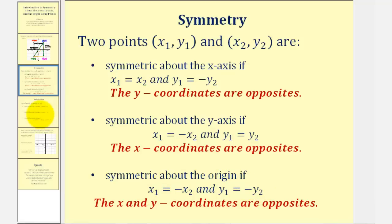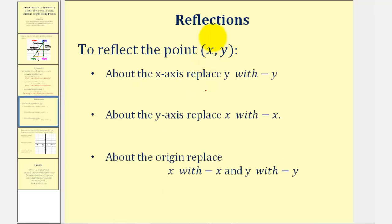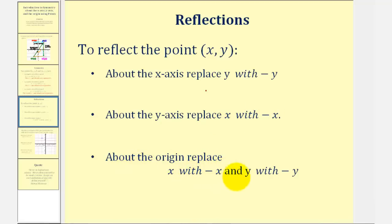Which means, if we're given a single point and we want to reflect the point about the x-axis, we replace y with negative y, or change the sign of the y-coordinate. If we want to reflect the point about the y-axis, we replace x with negative x, or change the sign of the x-coordinate. And to reflect a point about the origin, we replace x with negative x and y with negative y, or we change the sign of both the x and y-coordinates.